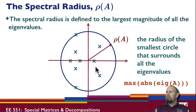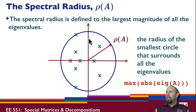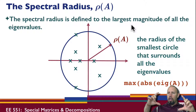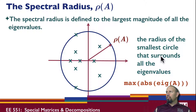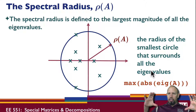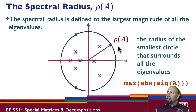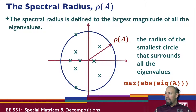The spectral radius is a natural property of the eigenvalues. If I take a matrix and plot its eigenvalues in the complex plane, the spectral radius is the radius of the smallest circle that surrounds all the eigenvalues — the circle tightens until it just touches the largest eigenvalue. You can compute it in MATLAB using max(abs(eig(A))).